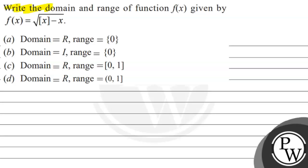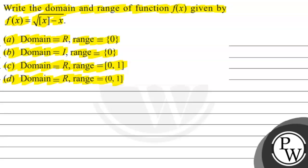Hello Watchmen. Let's see the question. The question says: write the domain and range of the function f(x), where f(x) is equal to the square root of the greatest integer function of x minus x. Option A: domain = ℝ, range = {0}. Option B: domain = I, range = {0}. Option C: domain = ℝ, range = [0,1]. Option D: domain = ℝ, range = [0,1).